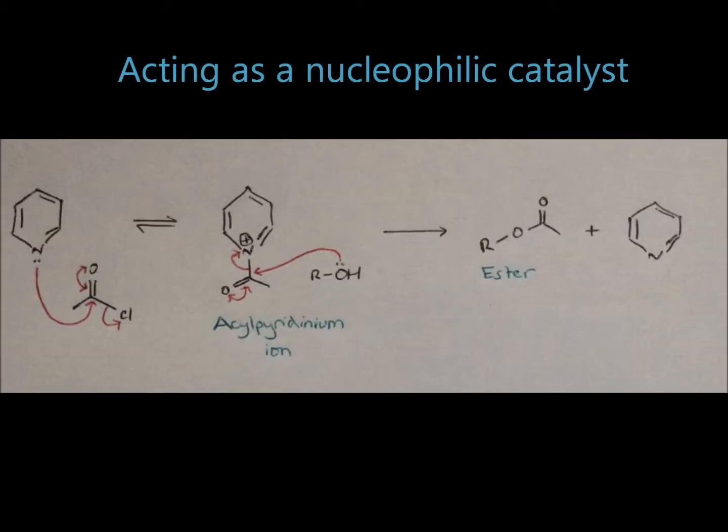Firstly, let's look at pyridine being used as a nucleophilic catalyst. As you can see here, the lone pair on the nitrogen atom in pyridine is donated to the acid chloride. The pyridine is acting as a nucleophile.